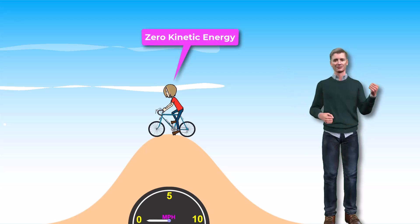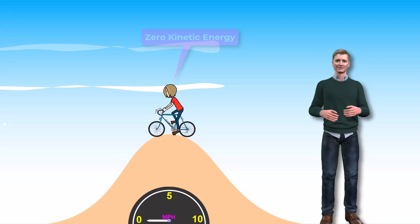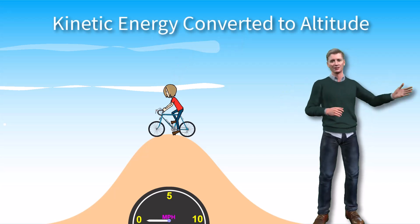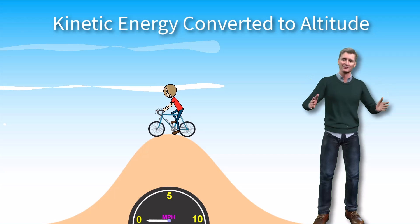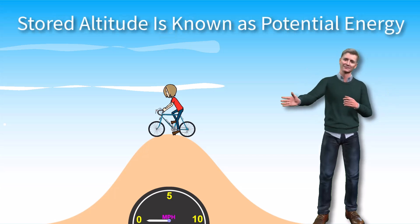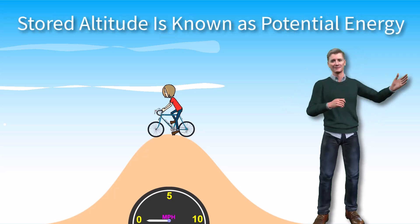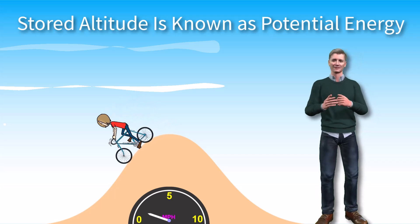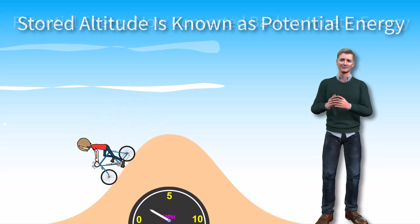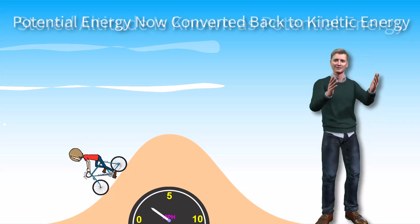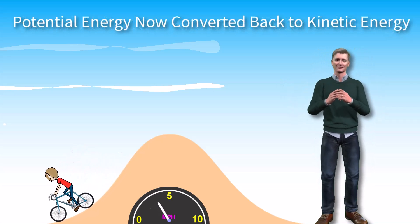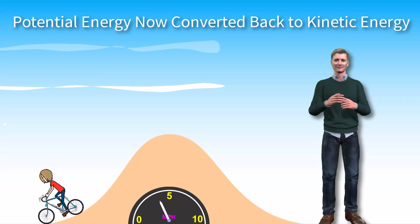So what happened to the energy of the bicycle? Was it lost? No. It was converted to altitude, which is another stored form of energy known as potential energy. Potential energy also has the ability to do work — specifically, the work needed to return the bicycle to its original speed of 5 miles per hour when it starts down the other side of the hill.